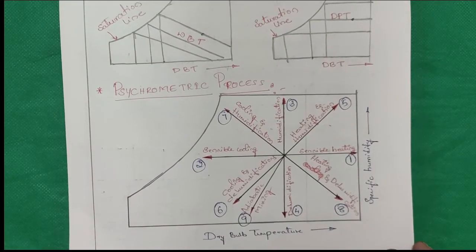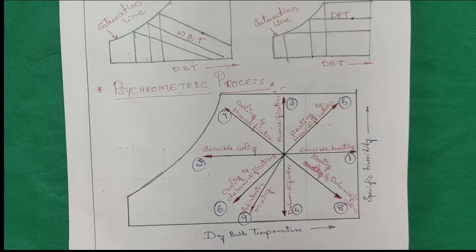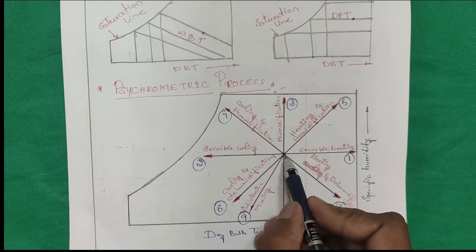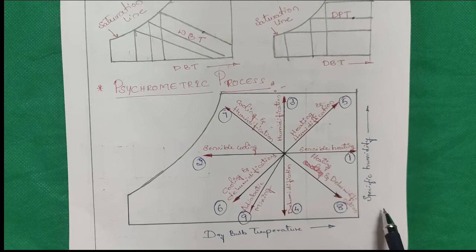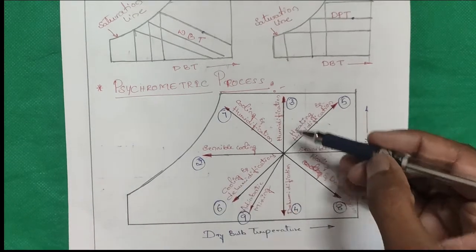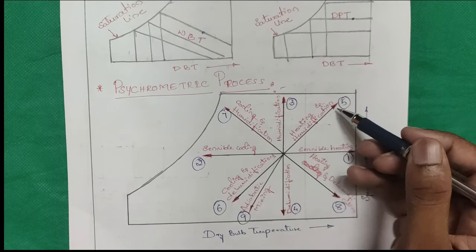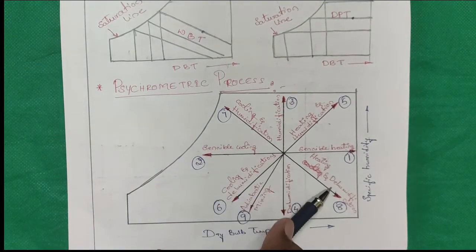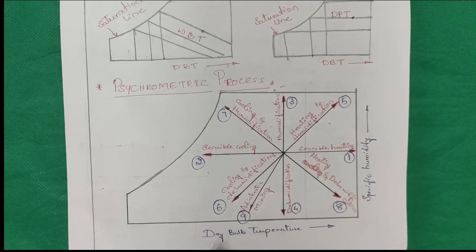What are the processes of psychrometry? There are eight to nine processes. One is sensible heating. Next, sensible cooling, humidification, dehumidification, heating and humidification, cooling and dehumidification, cooling and humidification, heating and dehumidification, and adiabatic mixing. These are the eight to nine processes in the psychrometric chart. We will discuss them one by one.